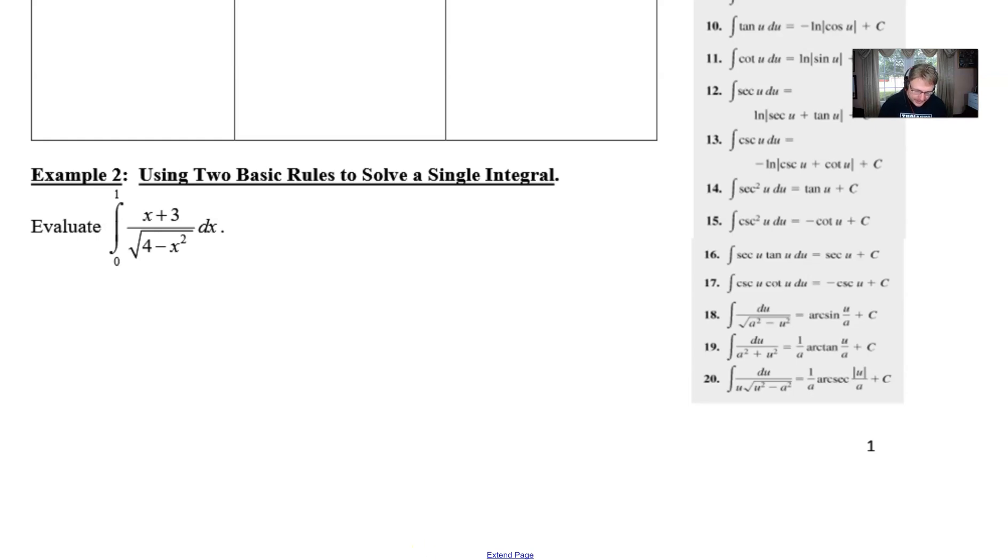Now what we're going to have to do is think about some things that don't work initially. For example if one tried to let u be the entire contents of the square root it's a very logical assumption. It's a strategy that works quite often but in this case it's not going to fly and the reason is because the derivative of this inside stuff is negative 2x.